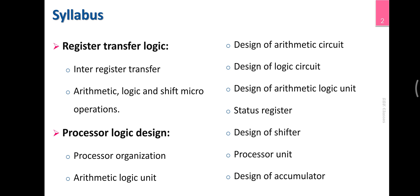How do you design a processor? There are two approaches. One is the resources, one is the process, one is the method. There are two approaches: one is the design aspect and one is the concept aspect.